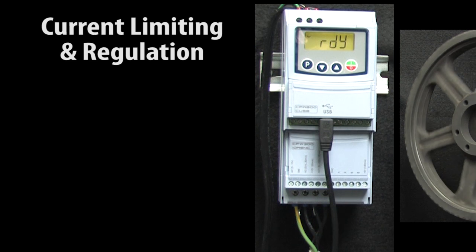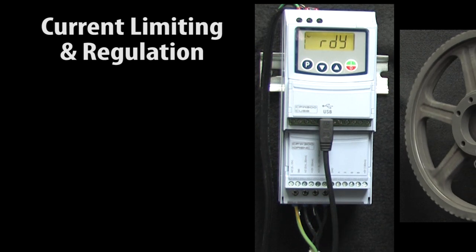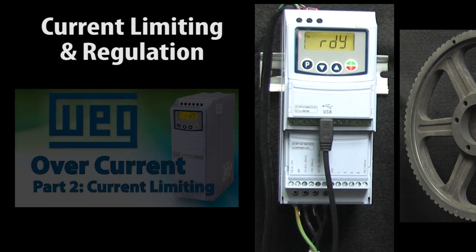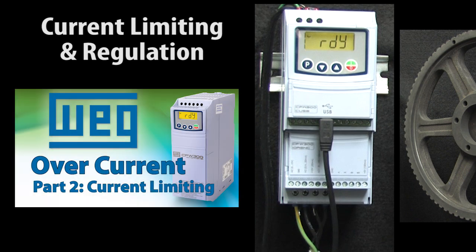The way that the CFW300 handles current limiting and current regulation in general is really good stuff to understand, and it will help you set that current limiting threshold appropriately. But it's a large topic all by itself, so we'll cover that in part 2.